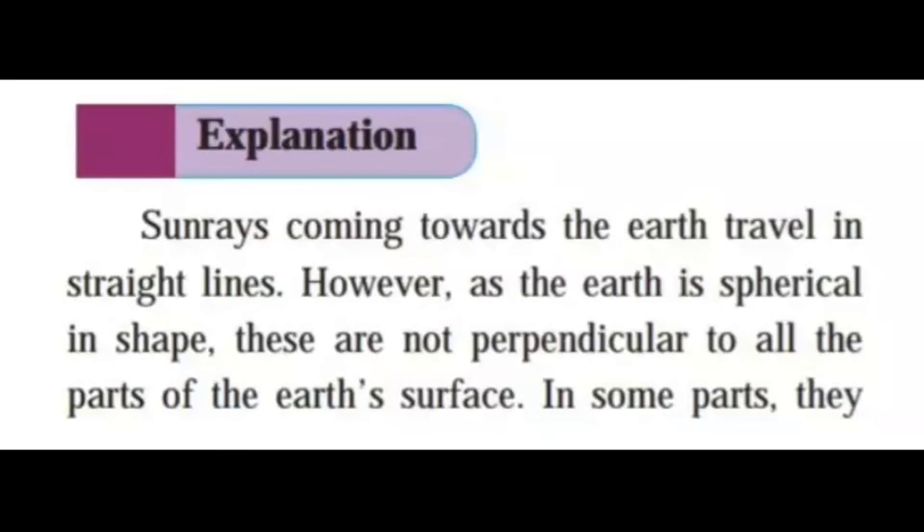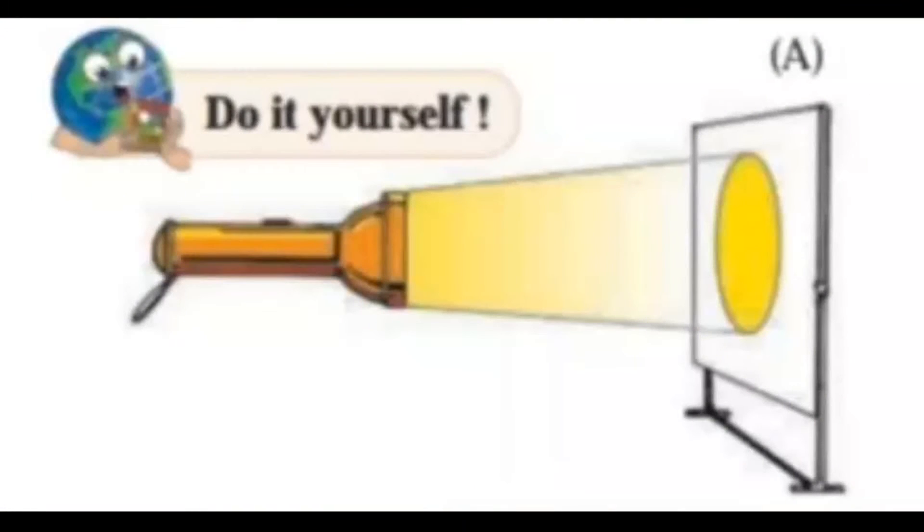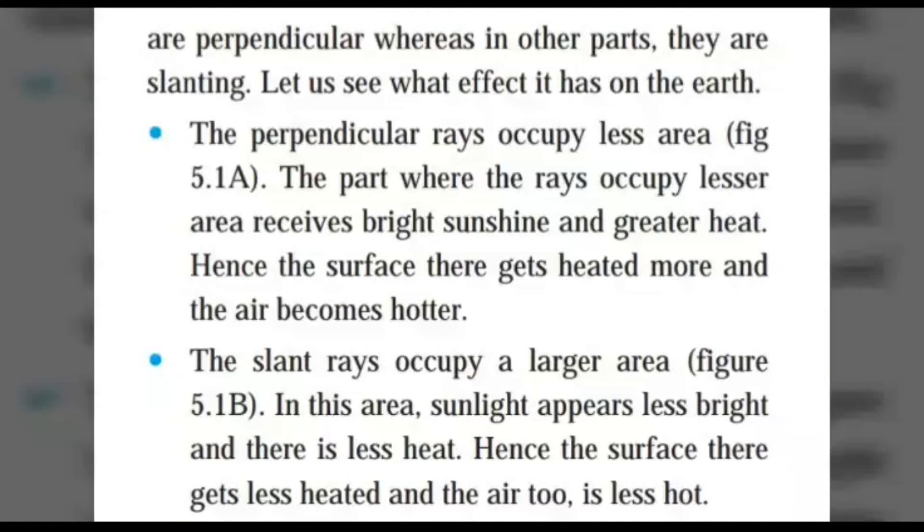Explanation for the activity. Sun rays coming towards the earth travel in straight lines. However, as the earth is spherical in shape, these are not perpendicular to all the parts of the earth's surface. In some parts, they are perpendicular, whereas in other parts, they are slanting. Let us see what effect it has on the earth. The perpendicular rays occupy less area. Figure 5.1a. The part where the rays occupy lesser area receives bright sunshine and greater heat. Hence, the surface there gets heated more and the air becomes hotter.